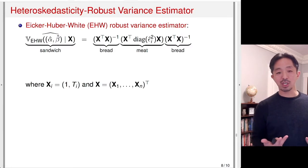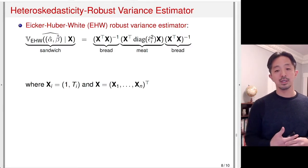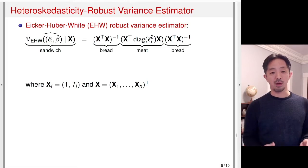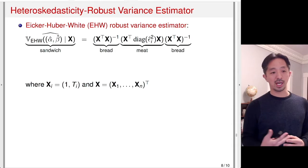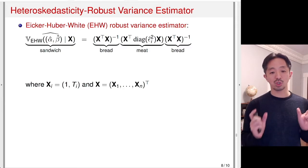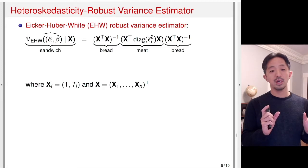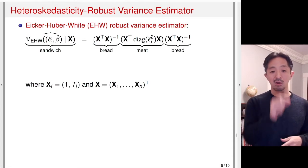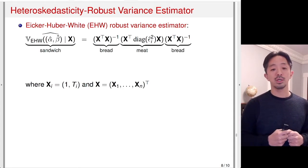In linear regression, we fix the heteroskedasticity problem using a robust variance estimator. This estimator is often called the sandwich estimator because of its form: two equal terms — the bread, (X-transpose X) inverse — sandwich the middle term called the meat, which is X-transpose times the diagonal matrix of squared residuals times X.